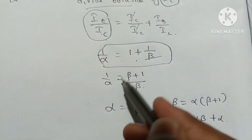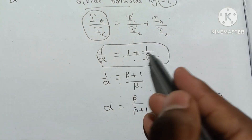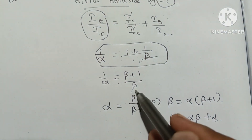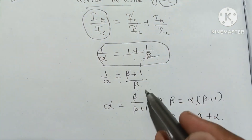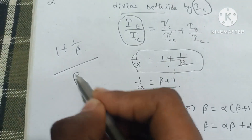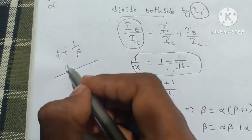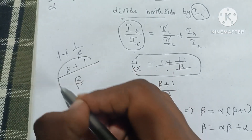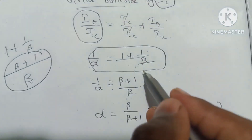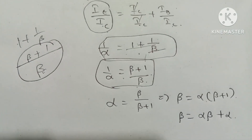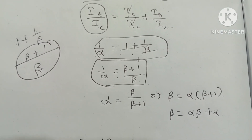So 1 by alpha is equal to 1 plus 1 by beta. Multiplying through, this becomes beta plus 1 by beta, so 1 by alpha is equal to beta plus 1 by beta.